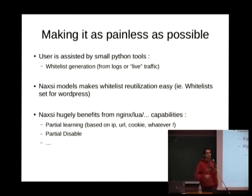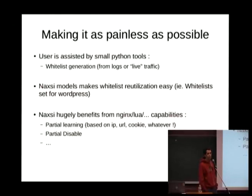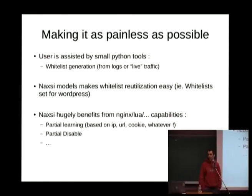Since writing all whitelists by hand can be painful, NAXI comes with various tools to make configuration as painless as possible. In learning mode, rather than dropping requests, NAXI passes them through while logging. Small Python tools help you generate whitelists based on exception rates relative to total traffic. This can be done from logs or live, where a small Python daemon listens on a specific location and catches potentially malicious requests, helping you decide whether each one is a real attack or a false positive.